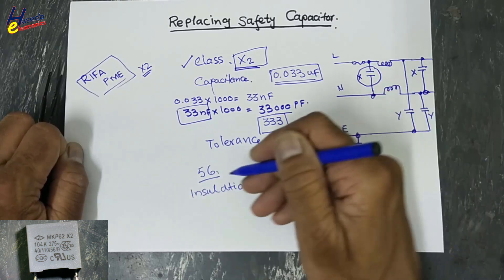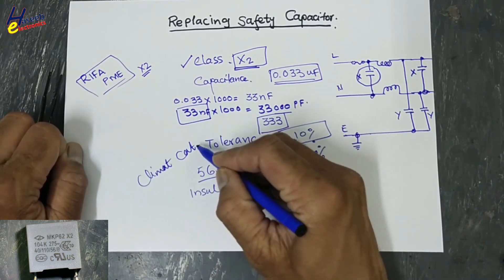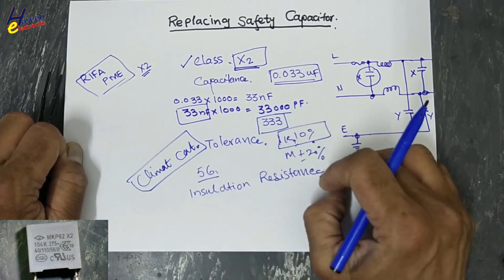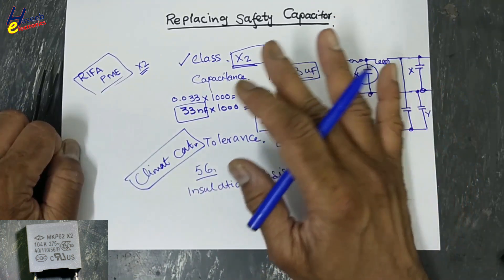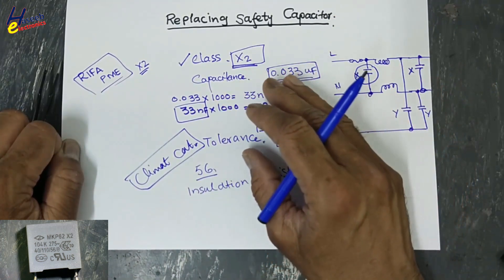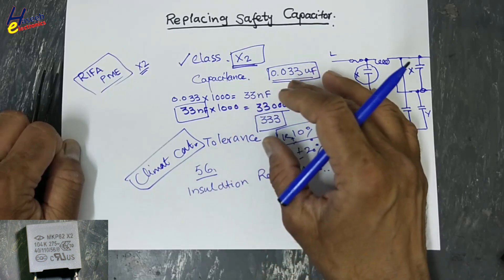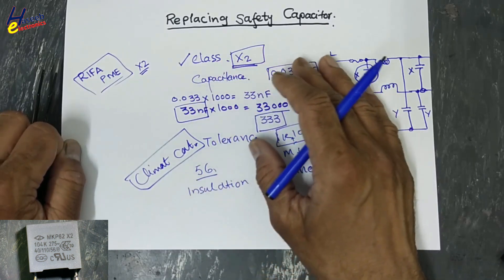Climate category, it is also a point, and insulation resistance. So these are the basic points that must be observed to select replacement for a safety capacitor.